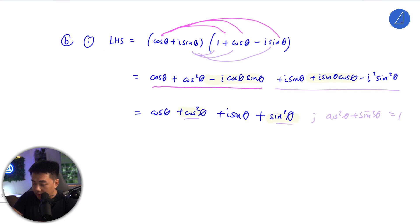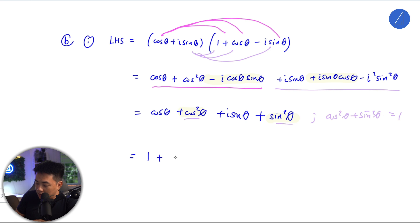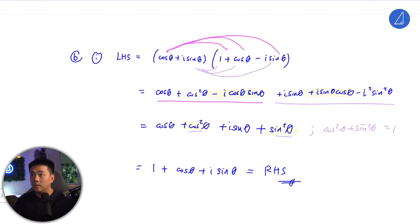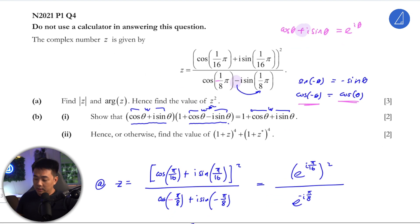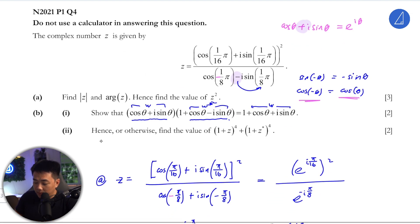And there we arrive at our answer: 1 + cos θ + i sin θ, which is the right-hand side. Now let's look at part b(ii): hence or otherwise, find this value.